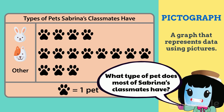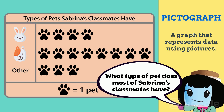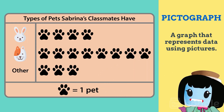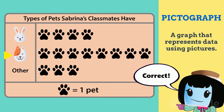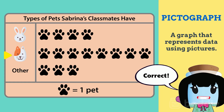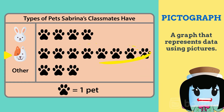What type of pets does most of Sabrina's classmates have? Did you say dogs? That's correct. Dogs has the most paw prints next to it.